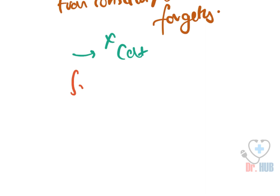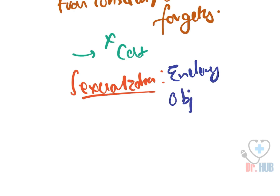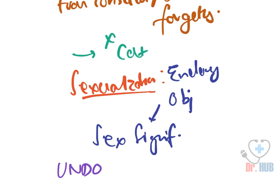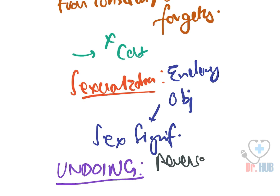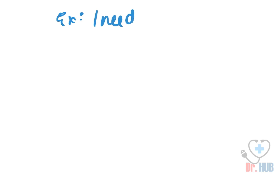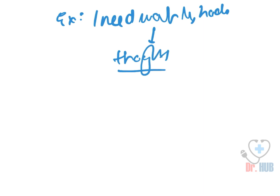Next is sexualization — undoing an object or function with sexual significance. Then we have undoing. Undoing is acting out the reverse of an unacceptable behavior. An example is: 'I need to wash my hands whenever I have these thoughts.' This is an example of undoing.